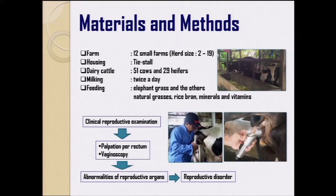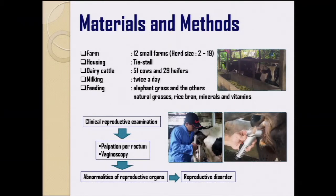In this study, we used 12 small farms, with herd size of only 2 to 19 cows, and a stall housing system. We also used 51 cows and 29 dairy heifers. Milking for the cows was done twice a day. For feeding, the farmers traditionally used elephant grass and some other natural grasses, along with rice bran, and sometimes minerals and vitamins.